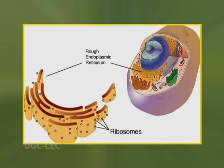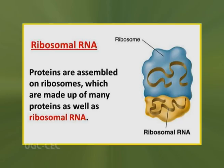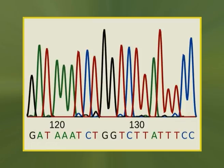The ribosome is an ancient and essential component of cellular organisms and its form and function is consistent across the spectrum of living things. A key aspect of ribosomes and ribosomal RNAs is that their function is very highly conserved by natural selection between and among species. However, the molecules that make up the ribosome, including the ribosomal RNAs, differ between species due to mutations in the sequences of the genes that encode them. Each component of the ribosome is generally extremely similar across all of life, though the exact DNA sequences encoding these components are not identical between organisms.